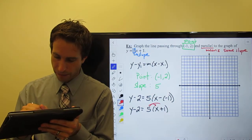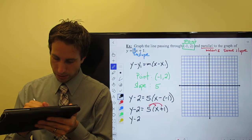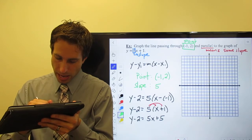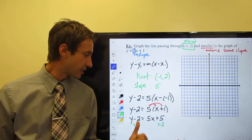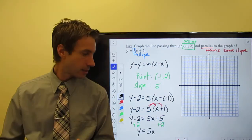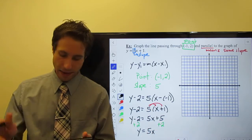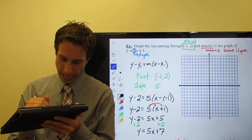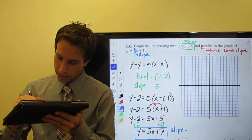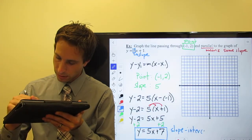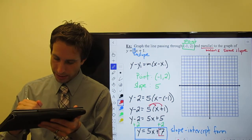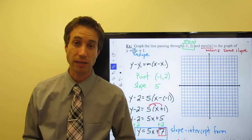Distribute the five through the parentheses: y minus two is equal to five x plus five. Add two to both sides because that's a minus two — that gets the y by itself. Five plus five, six, seven. I have the equation of my line in slope-intercept form. This is my y-intercept: positive seven.